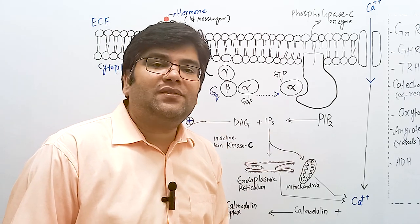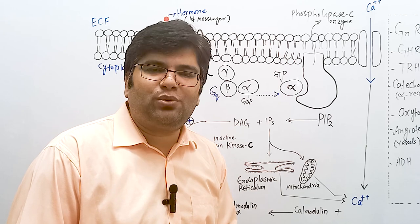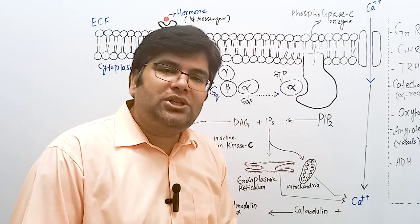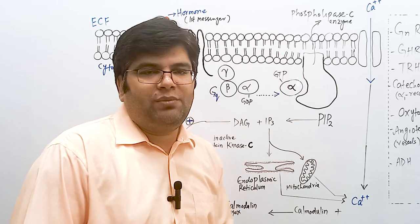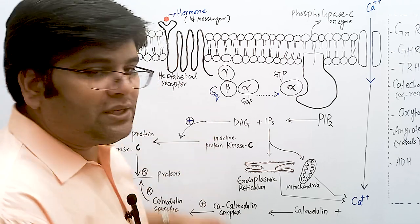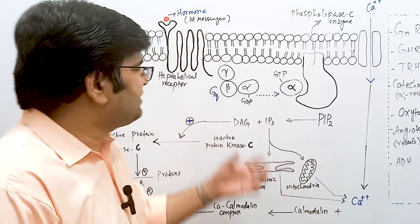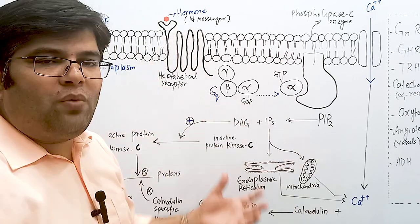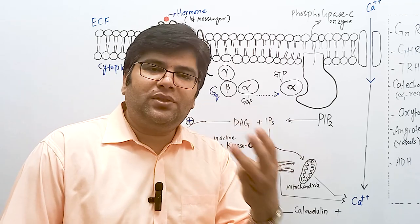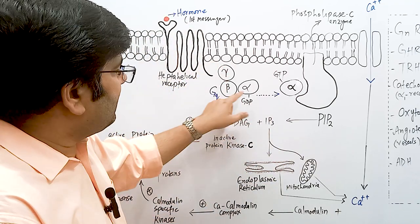In the cyclic AMP second messenger system, the G protein is Gs protein if it is stimulatory, or Gi if it is inhibitory. Here, the G protein is called GQ protein. Once again, this G protein is a heteromeric trimer consisting of three subunits: alpha, beta, and gamma.